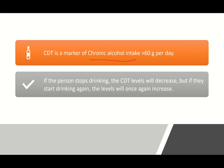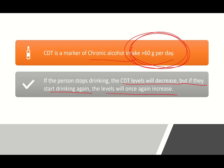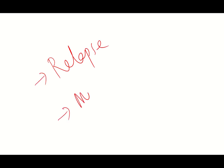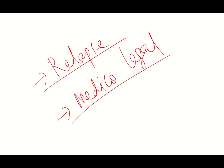CDT is a marker of chronic alcohol intake greater than 60 grams per day. If the person stops drinking, CDT levels will decrease, but if they start drinking again, the level will once again increase. That is why this is a useful marker for chronic alcohol consumption, relapse monitoring in people undergoing therapy, and medico-legal procedures.